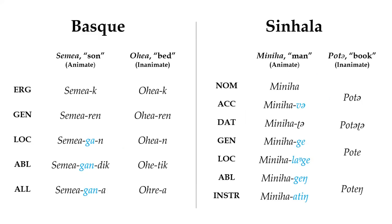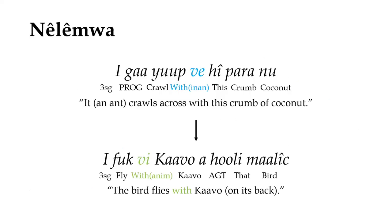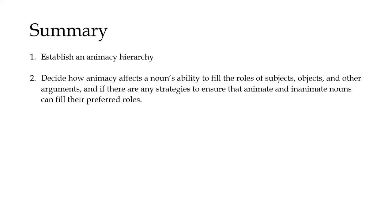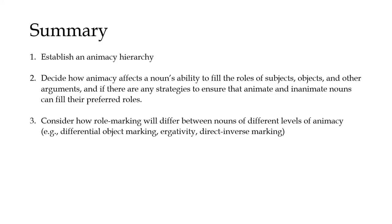Just about every language will be sensitive to animacy in at least some contexts, so when making a conlang, it's always worth thinking about where these sorts of distinctions will surface. Specifically, establish the language's animacy hierarchy, which could be as simple as a two-way split between animate and inanimate, or a more complex system with as many as seven or eight different categories. Decide how animacy affects a noun's ability to fill the roles of subjects, objects, and other arguments, and if there are any strategies to ensure that animate and inanimate nouns can fill their preferred roles. Consider how role-marking will differ between nouns of different levels of animacy, particularly in the context of differential object marking, ergativity, and direct inverse marking.